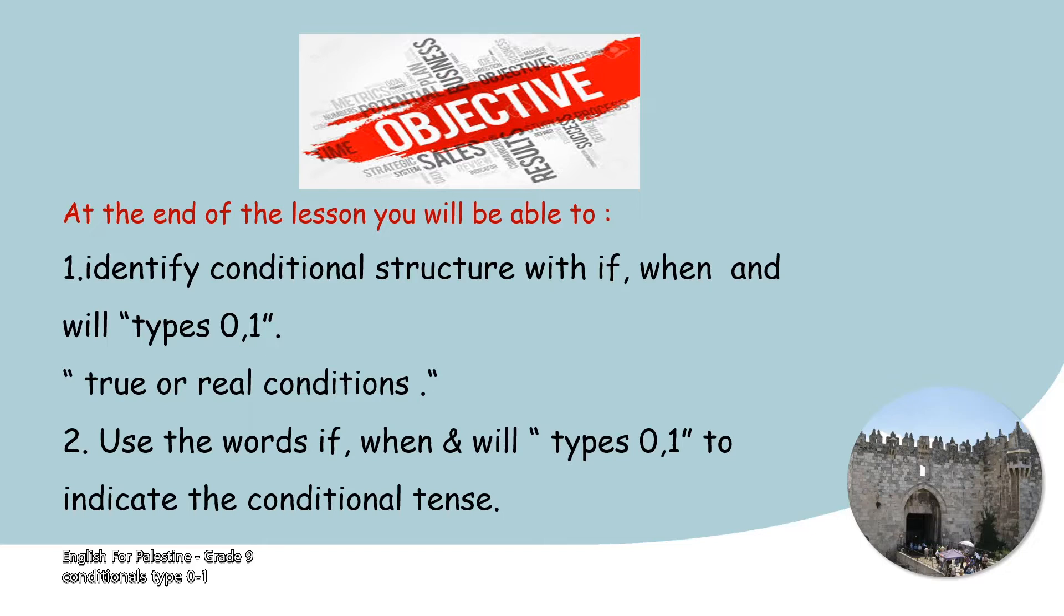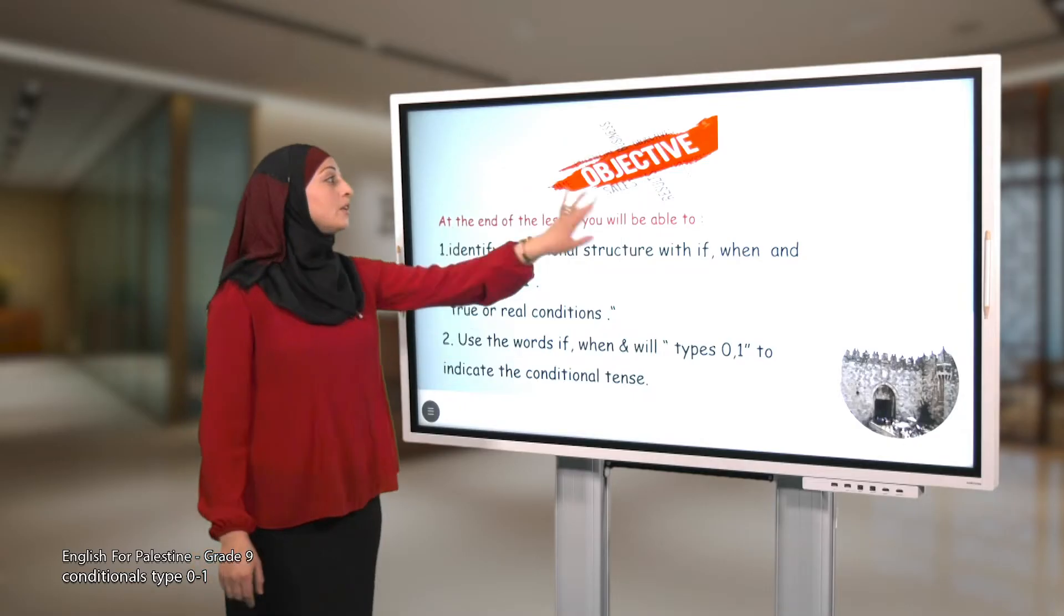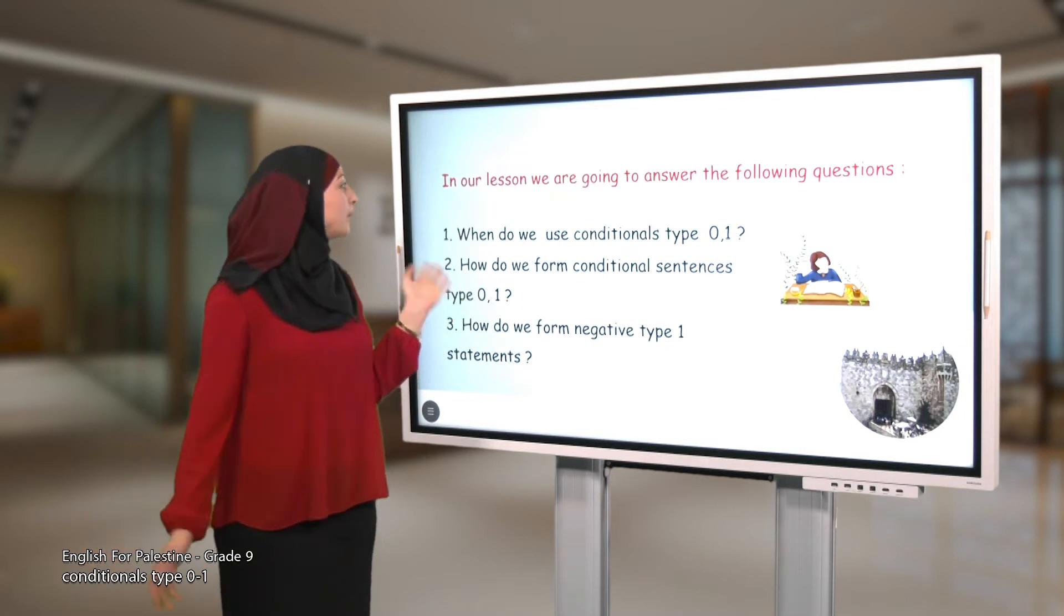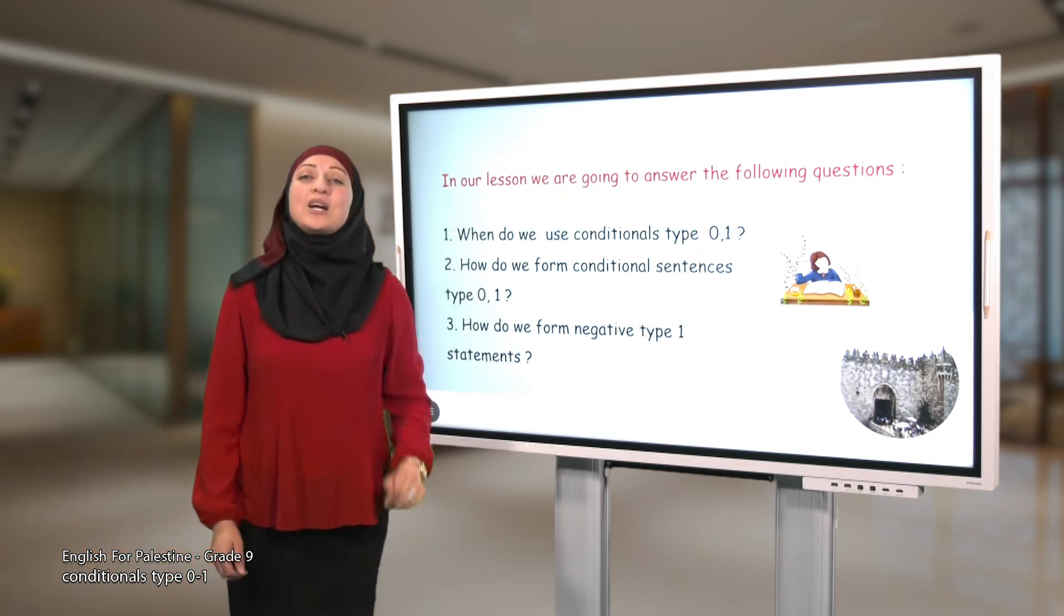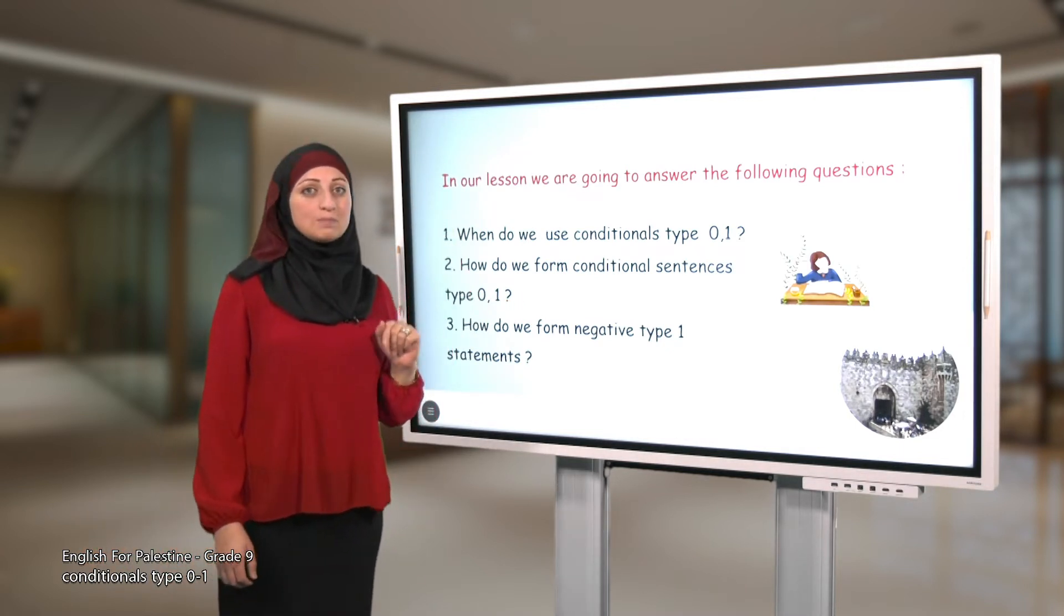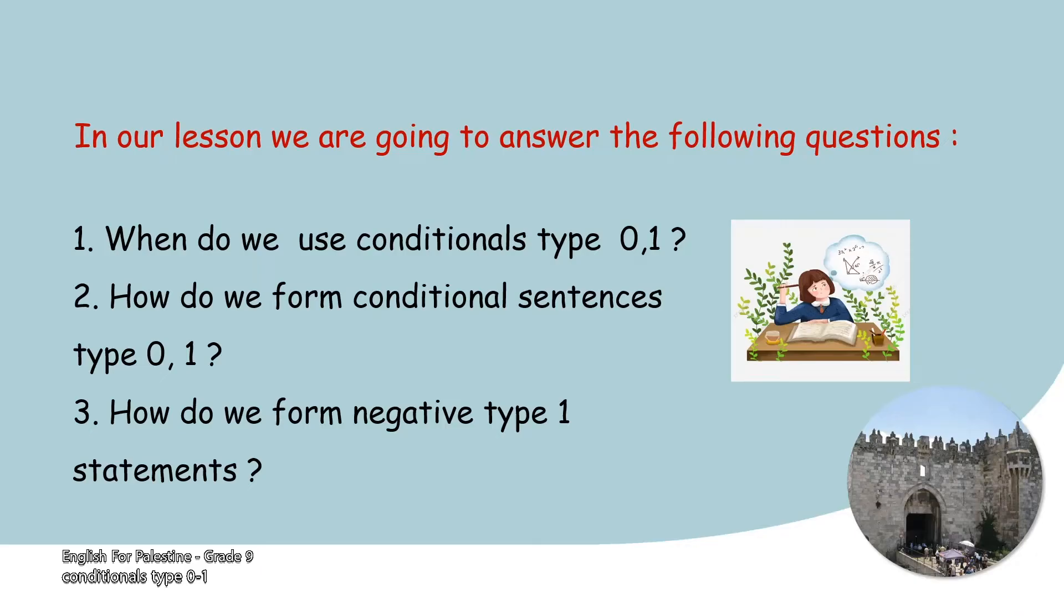We have questions here in our lesson. We are going to answer the following questions: Number one, when do you use conditional type 0 and 1? Number two, how do we form conditional sentences using type 0 and 1? Number three, how do we form negative type 1 statements?